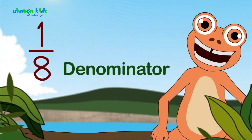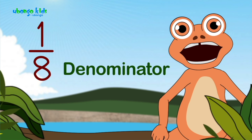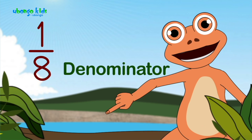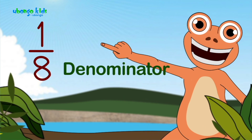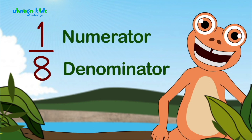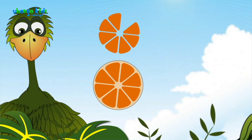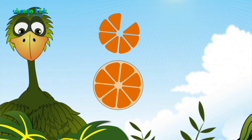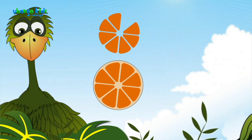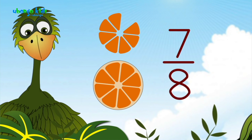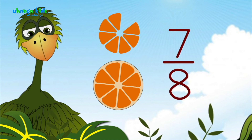Look here at the denominator — it is eight, the total number of pieces in the whole. You ate one, so that is the numerator. So what fraction is left? Seven eighths are left.